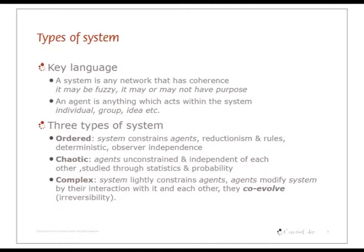But fundamentally, you've got totally random behavior. And again, we don't find that difficult because that's where probability and statistics come into their own, so we can start to manage that if we've got sufficiently large volumes of data. So we've been comfortable with those for some time. It's only after the last 100 years or so we've become aware of complex adaptive systems.